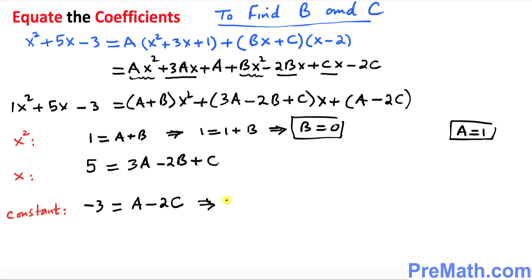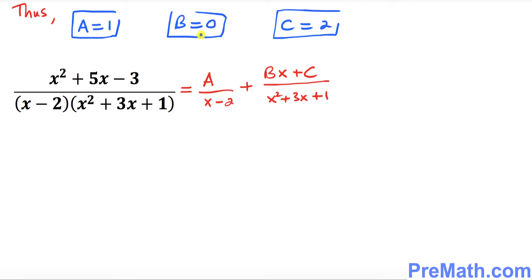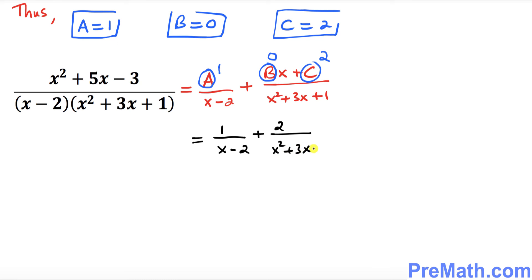To find C, we use the constant equation: negative 3 equals a minus 2c. With a equals 1, that gives negative 3 equals 1 minus 2c, so negative 4 equals negative 2c, meaning c equals 2. Therefore a equals 1, b equals 0, c equals 2. Substituting back, our complete partial fraction decomposition is 1 over (x minus 2) plus 2 over (x squared plus 3x plus 1), and that is our answer.